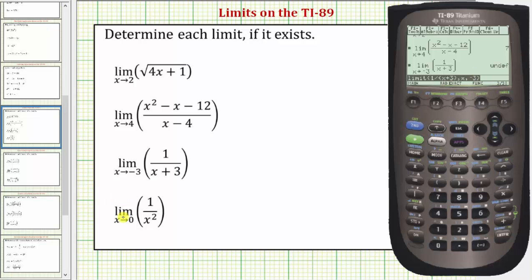Let's look at one more. We have the limit as x approaches zero of one divided by x squared. So we'll press F3, option three, one divided by x squared. We do not need parentheses around the x squared, even though we could include them if we wanted to. Comma, the variable x, comma.